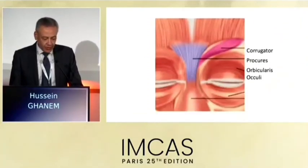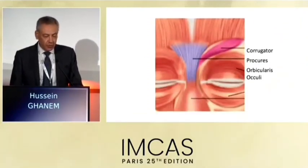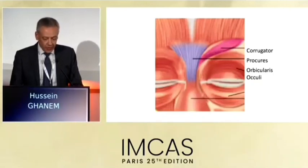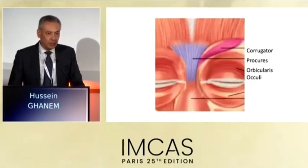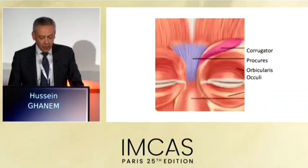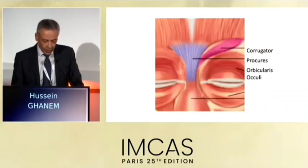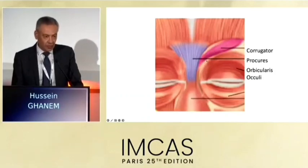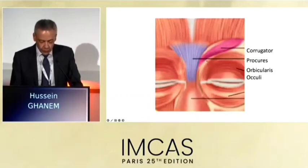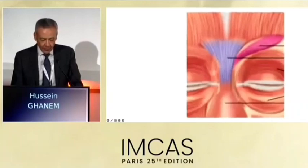Regarding depressors, we have three main depressors: the procerus muscle, the corrugator superciliae, and the orbicularis oculi muscle. The medial fibers of the orbicularis oculi muscles are known as, or described as, the depressor superciliae by some workers.